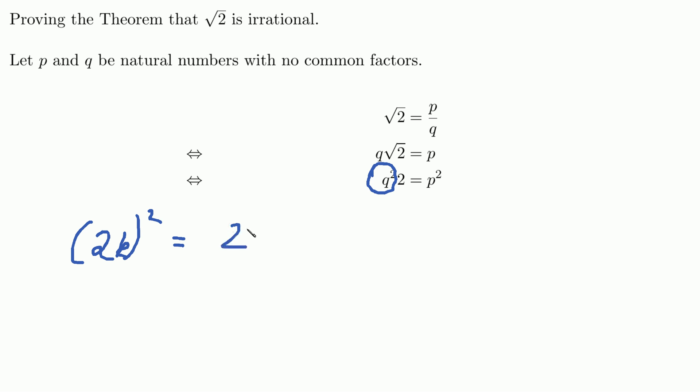So we have 2 squared times k squared here and we can write it down like this. And because we have a natural number factor on the right side and a 2 here, we still have an even number.